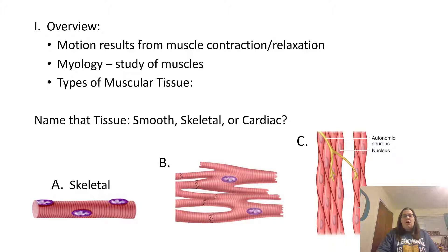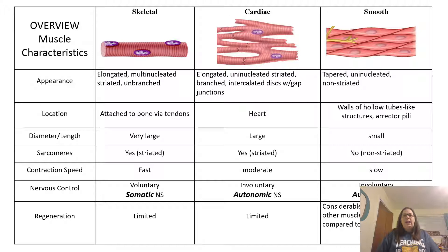Let's take a closer look at comparing these three. Skeletal muscle is an elongated, multinucleated, striated cell. It's unbranched and attaches to bones via tendons, which is why these are your skeletal muscles that make your bones move. They're very large in diameter and length, have sarcomeres which give them that striated structure, and their contraction speed is fast. They're controlled voluntarily by your somatic nervous system, but regeneration in skeletal muscles is very limited.